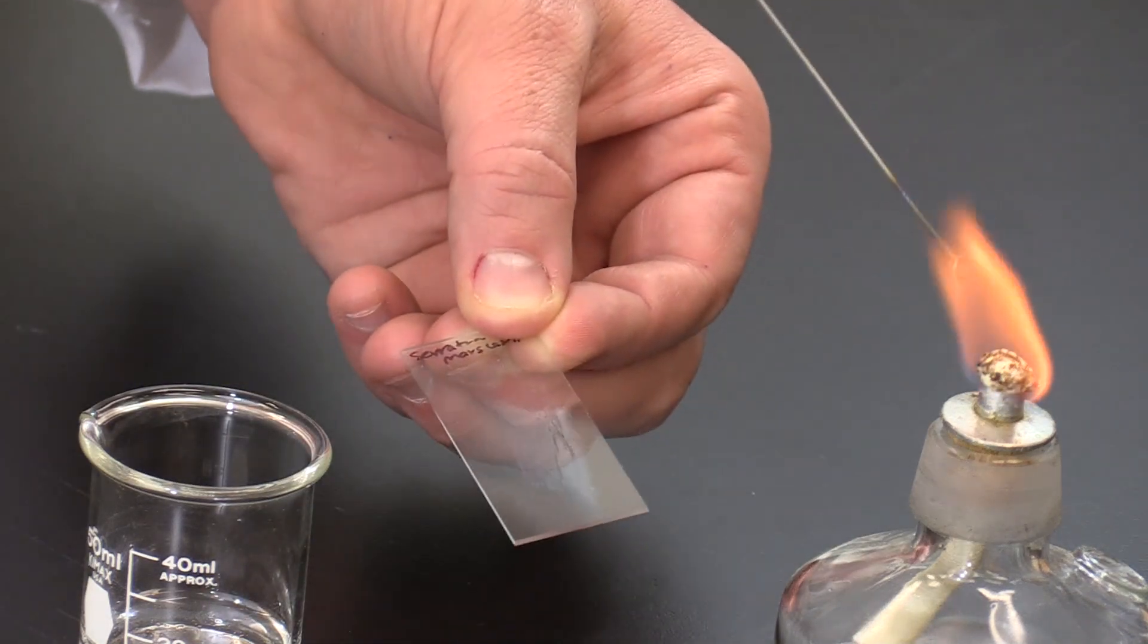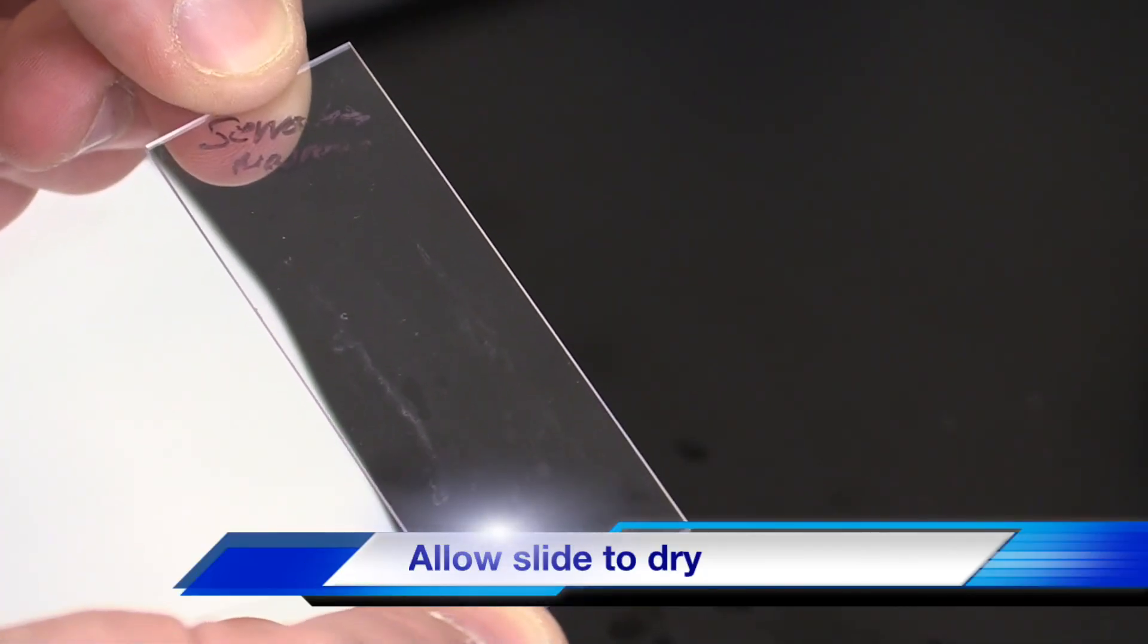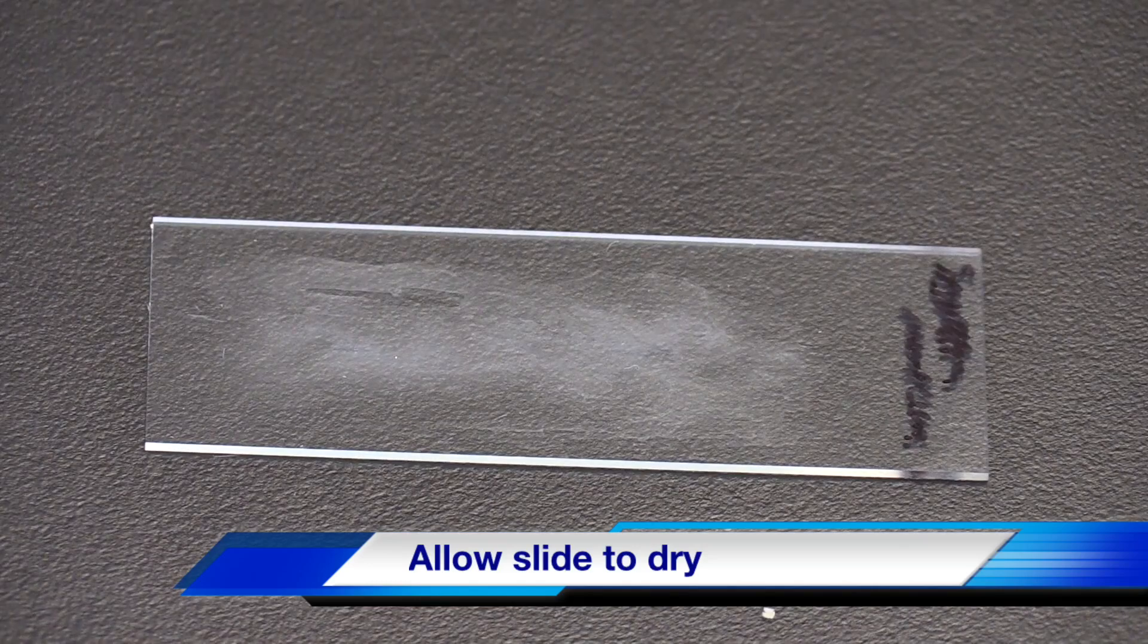After creating the smear, reflame the loop until it glows red. Allow the slide to air dry until it looks hazy with no water droplets.